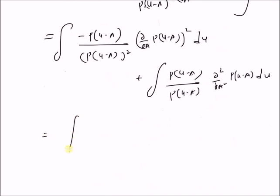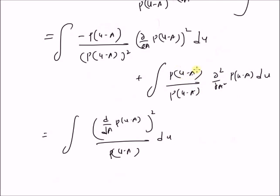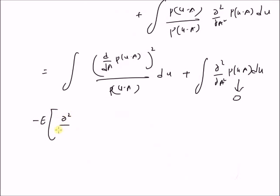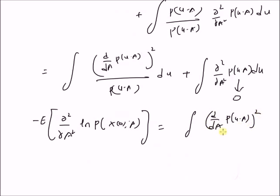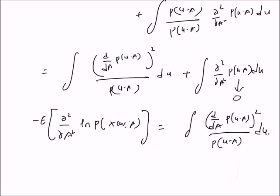Using the formula for expectation, the first term can be clearly written as the integral of the first derivative of P(U minus A) with respect to A, whole squared, divided by P(U minus A), du. The second term is the integral of P(U minus A) divided by P(U minus A) times the second derivative of the probability distribution, which is clearly equal to zero — we can take the derivative outside, the integral becomes 1, and the derivative of constant 1 is 0. Therefore, the negative expectation of the second derivative of the log likelihood function equals the integral of the first derivative of the probability distribution whole squared divided by P(U minus A), from minus infinity to plus infinity.